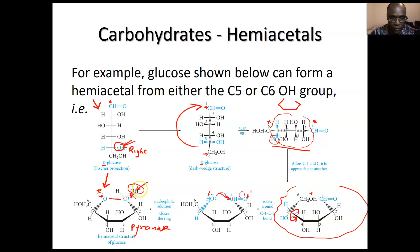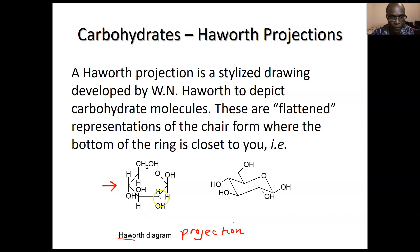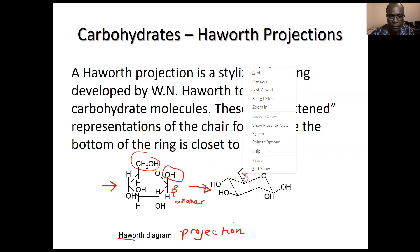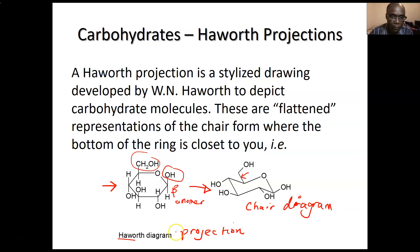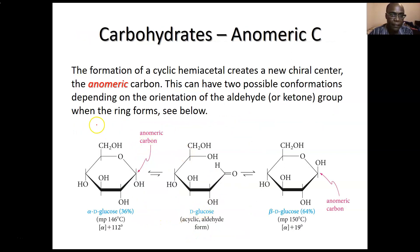The OH that came from the carbonyl — it could end up pointing up or down. If the OH is up and the CH₂OH is also up, we call that beta — that's the beta anomer. The same Haworth projection can be drawn in chair form where we want big groups equatorial to avoid 1,3-diaxial interactions.